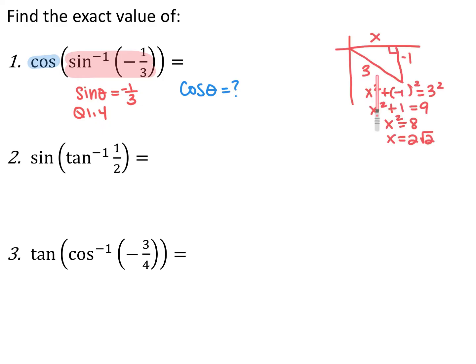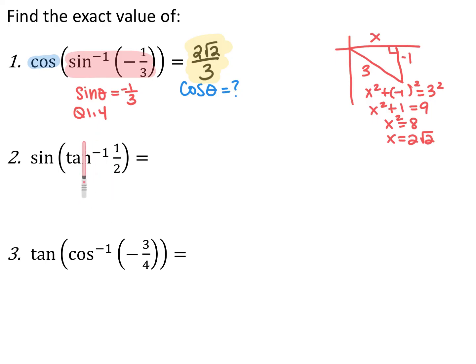I drew my triangle in the fourth quadrant: y is negative one, r is three, and I find x using the Pythagorean theorem, giving x equal to two root two. The outside question asks for the cosine of that angle. Cosine is x over r, so cosine equals two root two over three. When they're not on the unit circle, the inside part gives you enough information to draw a triangle, then use the Pythagorean theorem to evaluate the outside trig function. Go ahead and pause the video and try the second two.